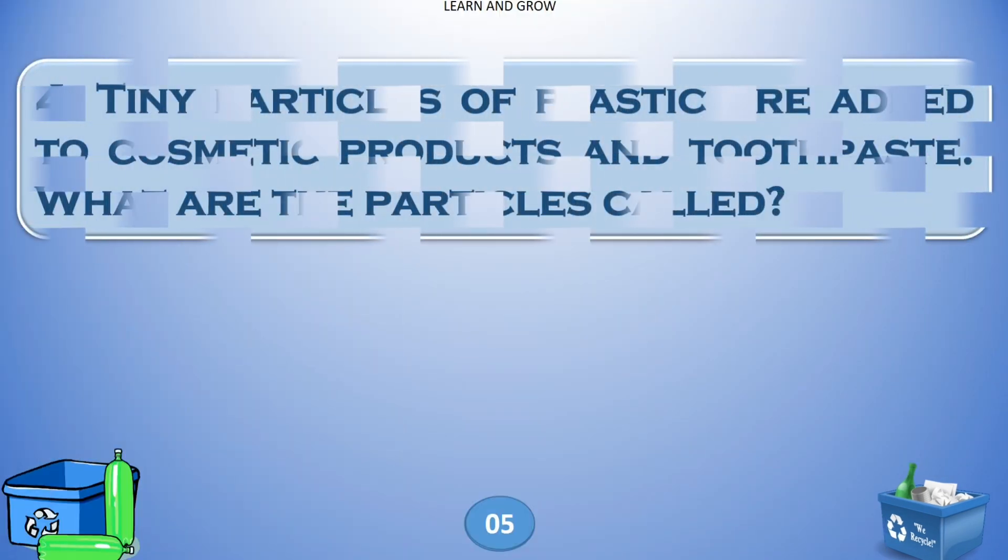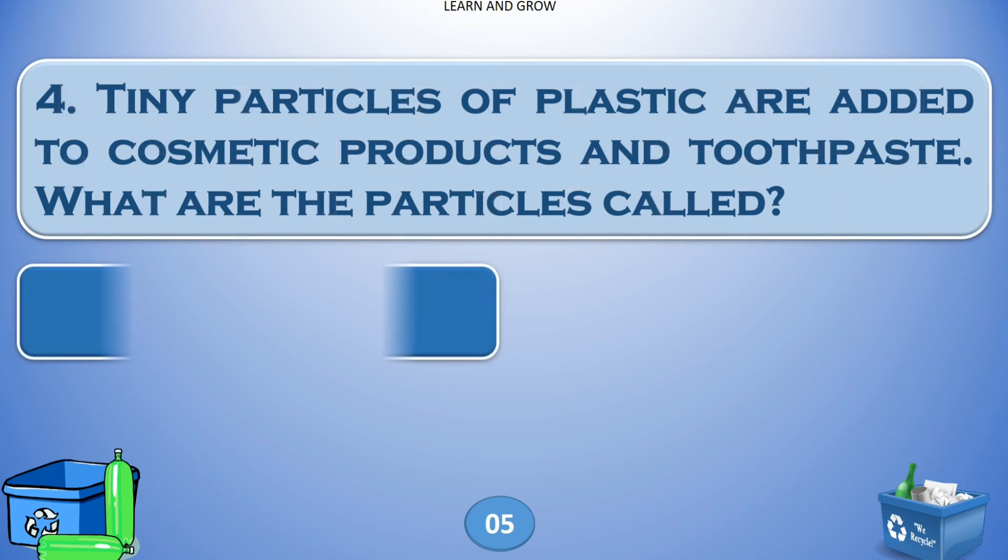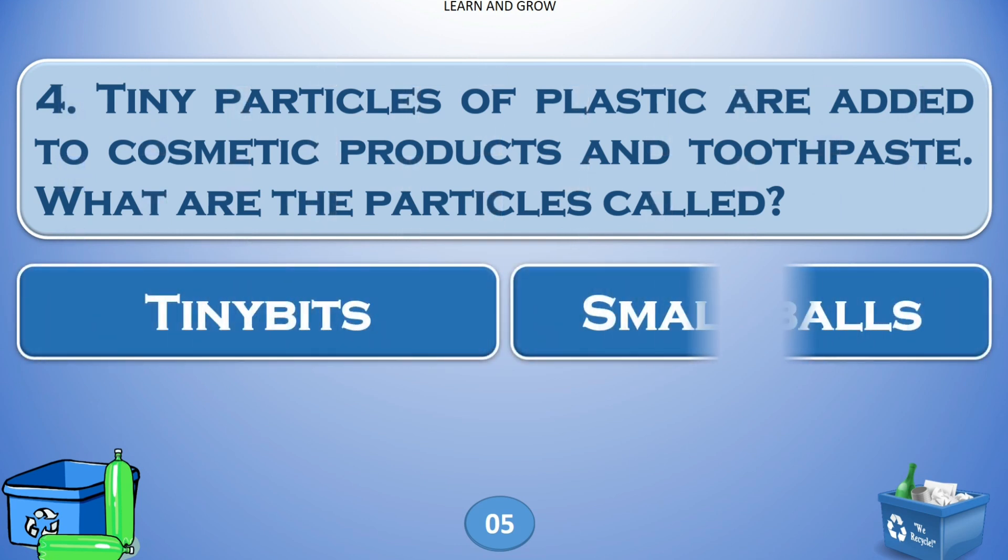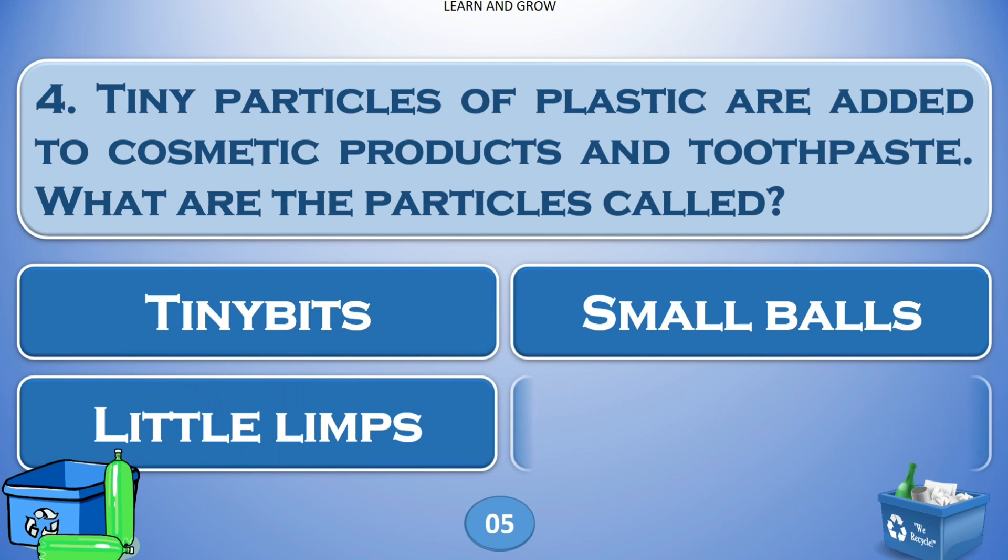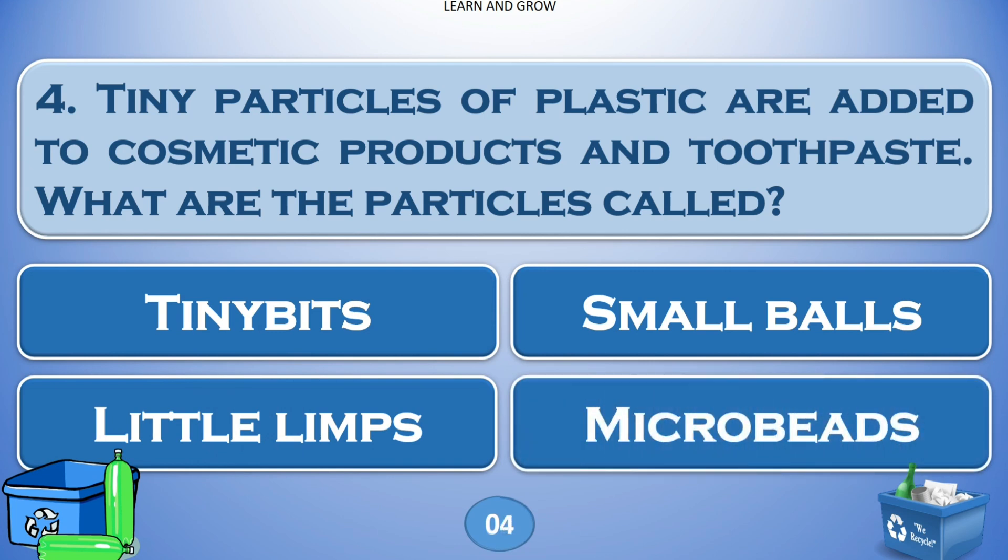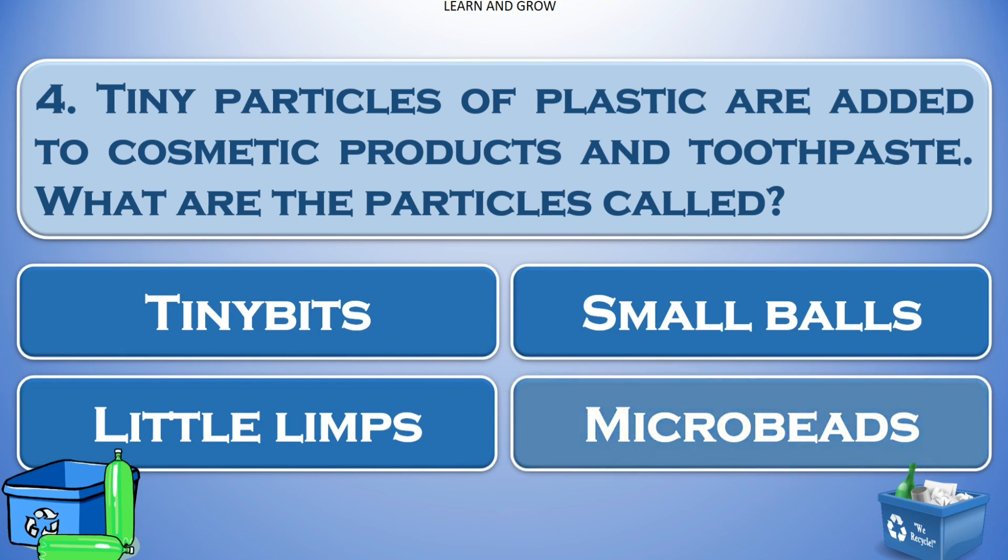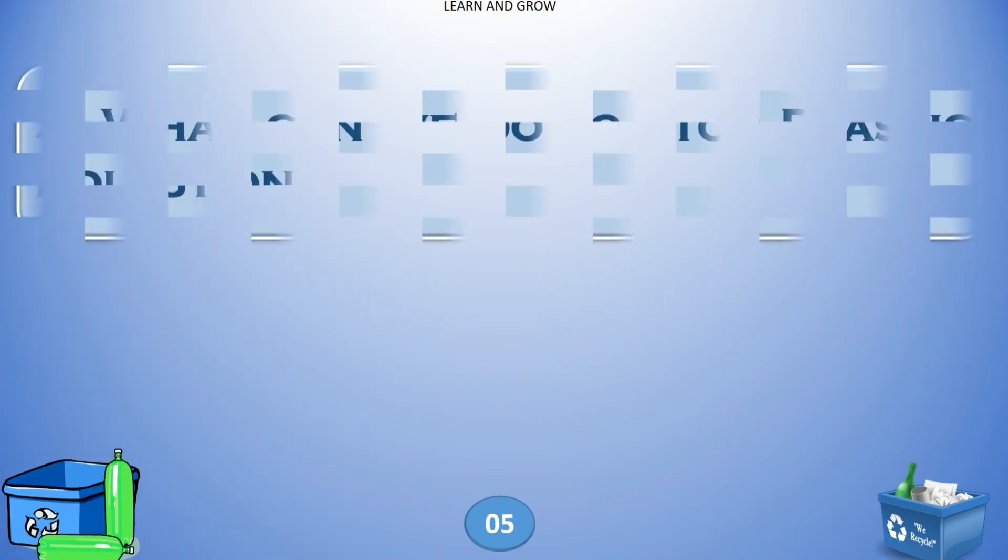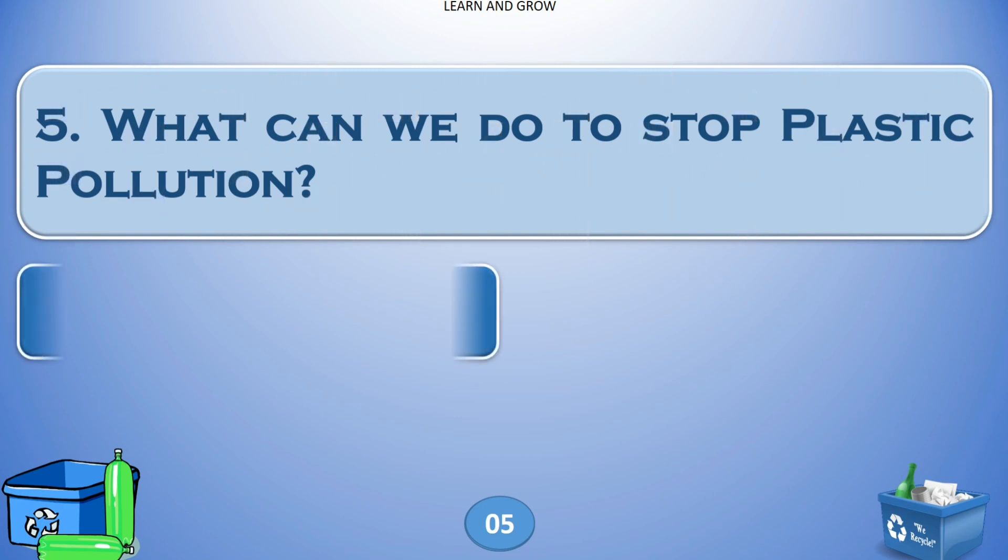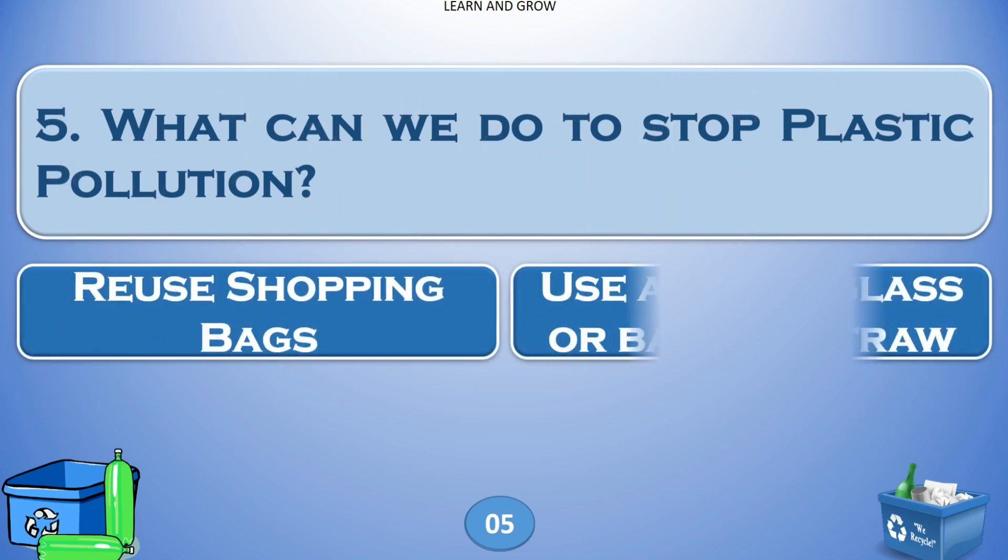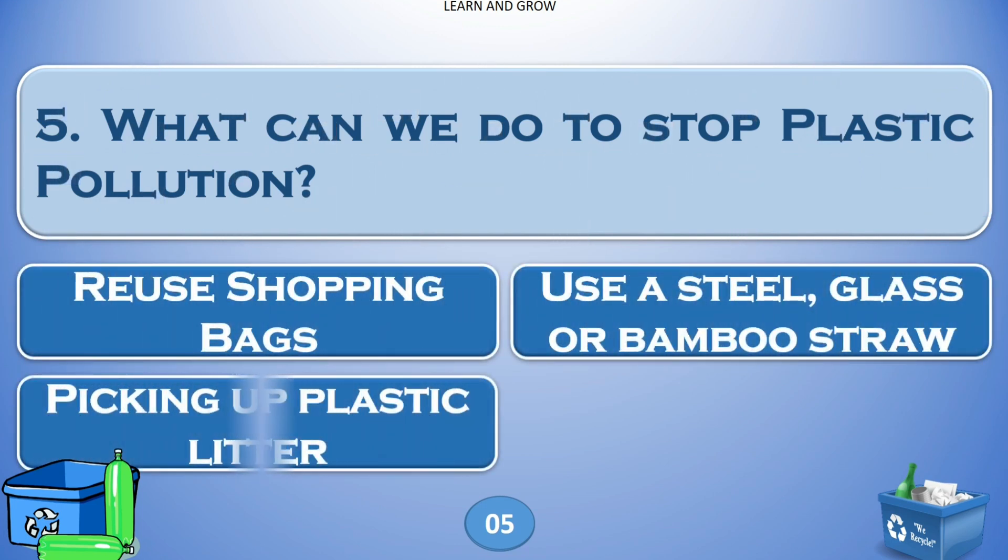Tiny particles of plastic are added to cosmetic products and toothpaste. What are the particles called? Options: A) tiny bits, B) small balls, C) little limbs, or D) microbeads. The answer is microbeads.